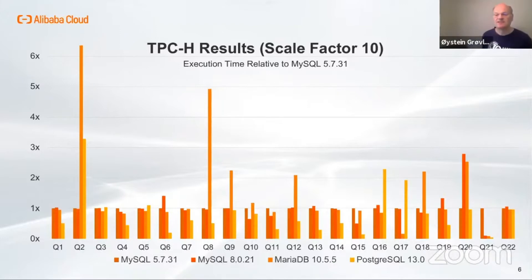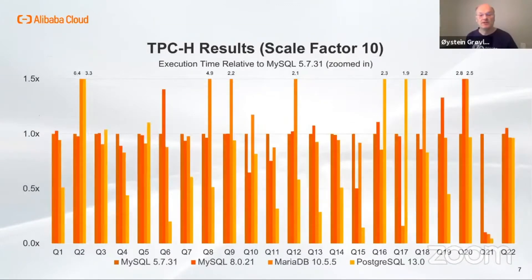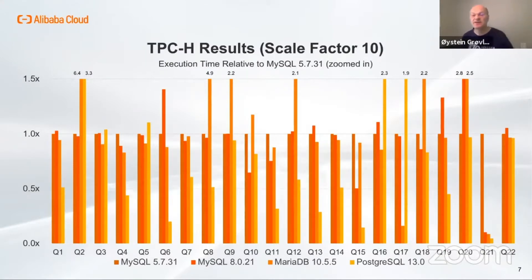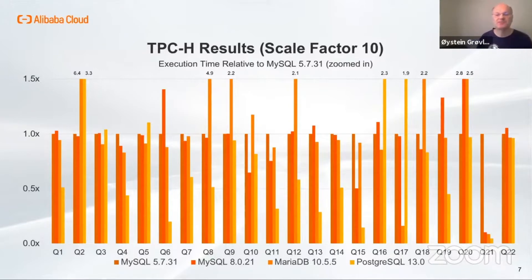At the same time, we see that MariaDB is faster than MySQL for 12 of the 22 queries. If you zoom in a bit, we clearly see that Postgres is the overall winner — it is fastest for 15 queries and often more than 50% faster than the others. I do not claim to be a Postgres expert, so there's probably ways to improve their performance even further. Also, for MariaDB, I did not turn on optimizer features that are not on by default, so there might be room for improvements there too.